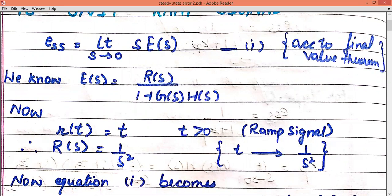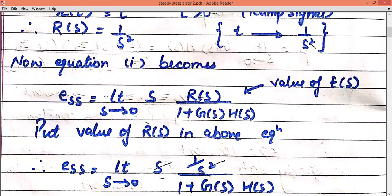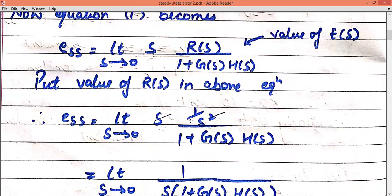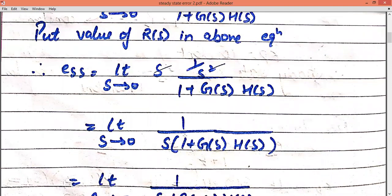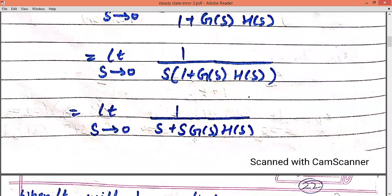Now in equation 1, we have to implement the value of the ramp signal. First we will keep the value of the error signal in this equation. Equation 1 becomes ESS equals to limit S tends to 0, S into R(S) upon 1 plus G(S) into H(S). Now putting the value of R(S), which is 1 upon S squared, after putting the values we simplified the equation. It simplifies to 1 upon S bracket 1 plus G(S) into H(S).